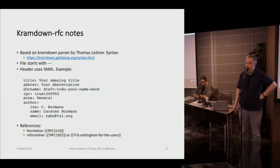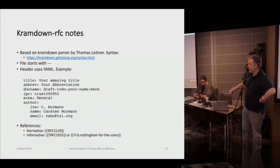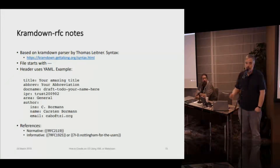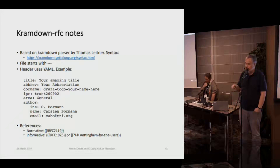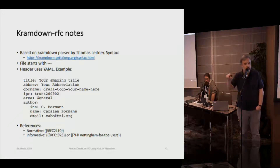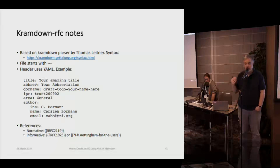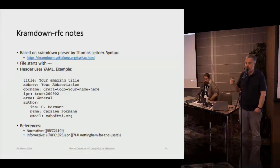To work with it: it's based on a variant of Markdown called Kramdown, developed by Thomas Leitner. You can go to that URL to see all of the syntax. You begin your file with three dashes and then a header using YAML — your title, abbreviation, all those kinds of things. To incorporate references, the syntax is really simple. For a normative reference, you put double curly braces, an exclamation point, then whatever you want for the normative reference, followed by two closed curly braces. For an informative reference, you put a question mark instead. The kdrfc tool will automatically pull the references, put them in its local cache, and build all that for you — no need to do xincludes or other pieces.